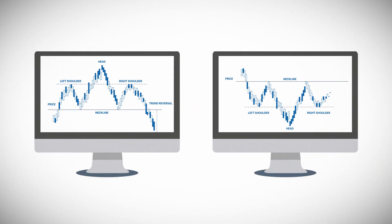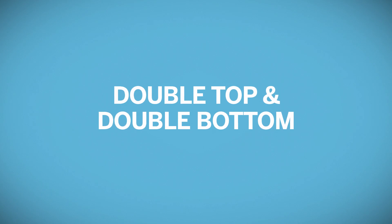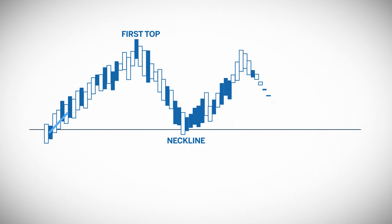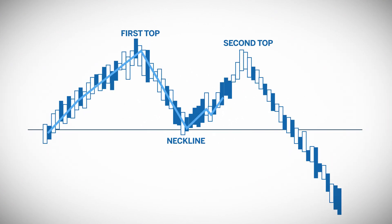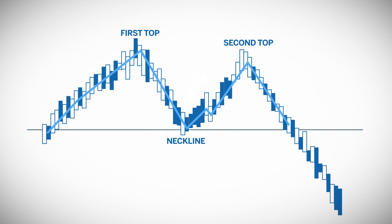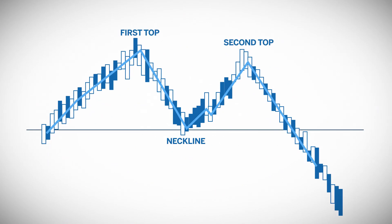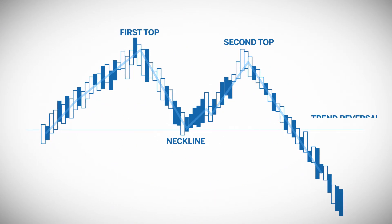Inverse head and shoulders are possible in a downtrending market, but not as common. Double tops and bottoms are just like they sound. The market makes two consecutive tops at around the same price level. The second attempt to break out of the market could not make a higher high and retraced, forming a second top. This is an indication that the market might have run out of upward momentum and might begin to push down.